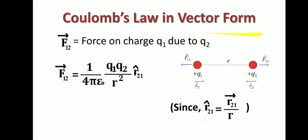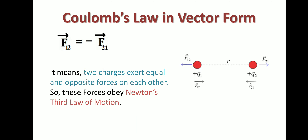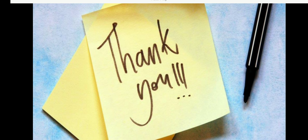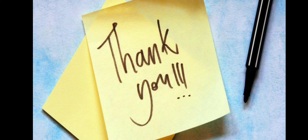These two equations for F₁₂ and F₂₁ represent Coulomb's law in vector form. Comparing the two equations, we get the relation F₁₂ = −F₂₁. If we consider F₁₂ as the action force, then F₂₁ is the reaction force, and vice versa. The negative sign represents the opposite directions of the forces. So these two charges exert equal and opposite forces on each other, obeying Newton's third law of motion, which states that every action has an equal and opposite reaction.